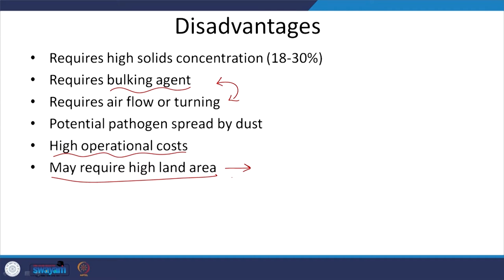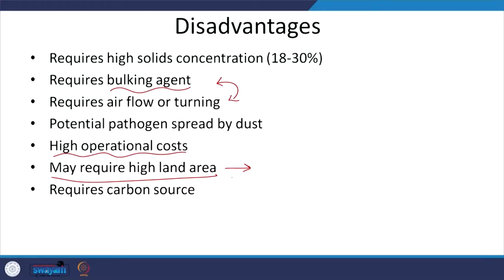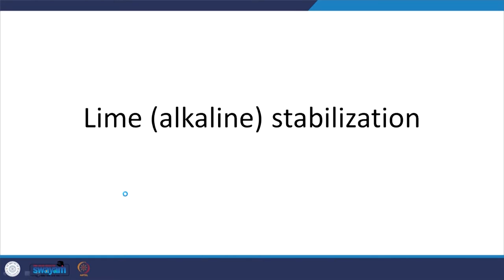Depending upon the type of sludge you might need to add a carbon source. If you do not maintain it well you can have odour problems. Also, there is potential for pathogens to spread by dust since the pile is open and aerated with wind blowing in — so high operational costs, and especially in India where land costs are high in metropolitan areas, that is going to be a concern.